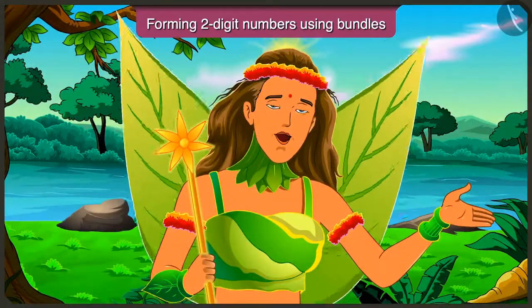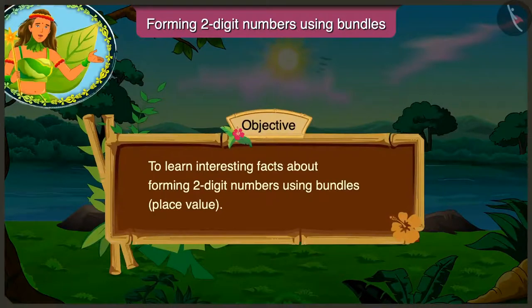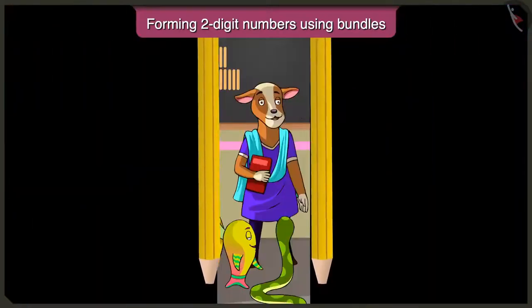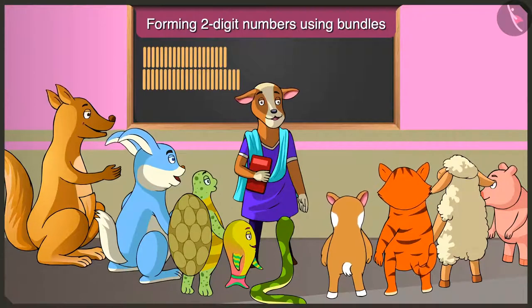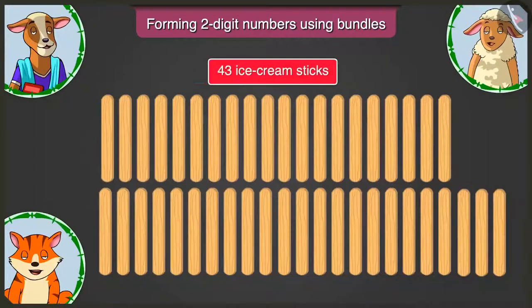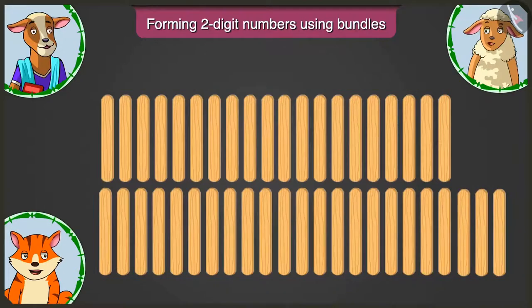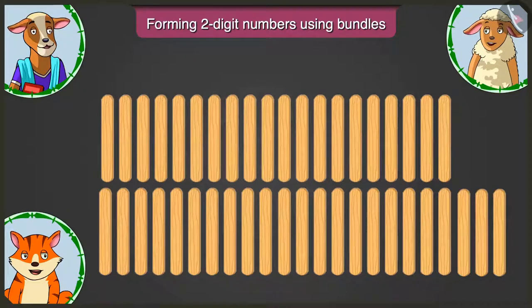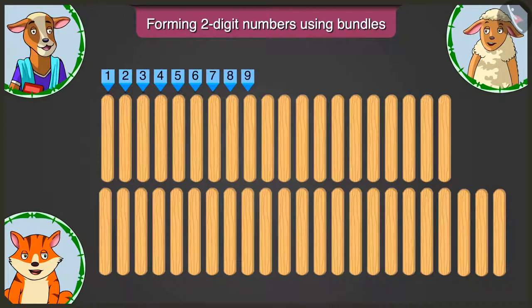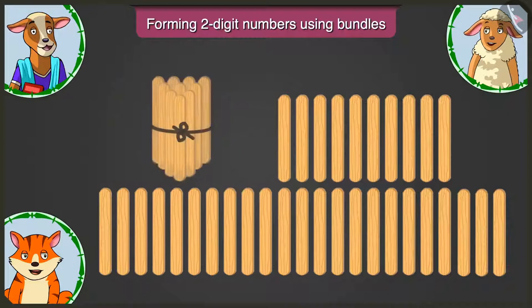Children, today we will learn interesting facts about forming two-digit numbers using bundles — place value. Can you make bundles of tens out of these 43 ice cream sticks? Let me explain. There are 43 ice cream sticks. First, make one bundle of tens: 1, 2, 3, 4, 5, 6, 7, 8, 9 and 10. Here is one bundle of tens.